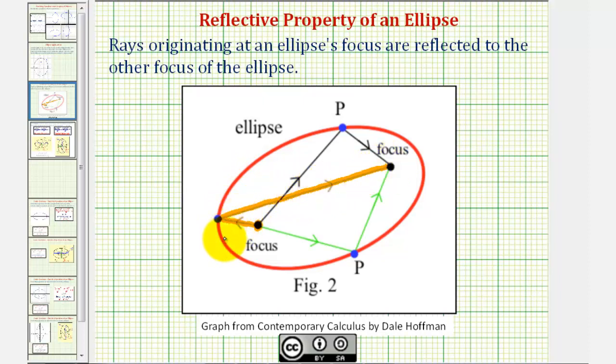Also remember that some of these distances would always be the same. If we call this length D sub one and this length D sub two, D sub one plus D sub two is always equal to two A, which is the length of the major axis.